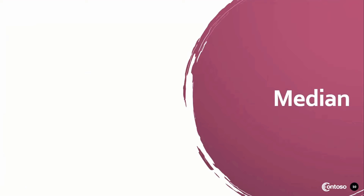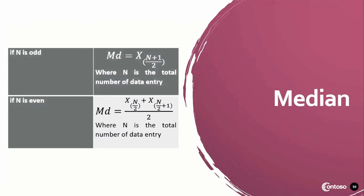Let's now proceed with the median. We have two formulas to compute for the median. First, if n is odd, the total number of data entry, the formula for the median is x sub (n+1)/2. While if the total number of data entry is even, the formula for the median is x sub (n/2) plus x sub (n/2 + 1), all over 2. Let's apply these formulas on the examples given.